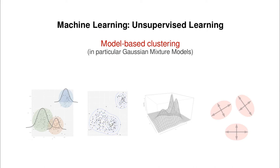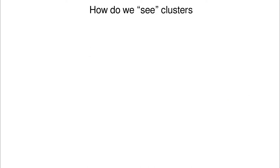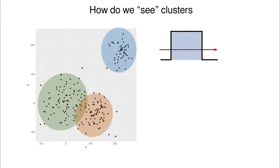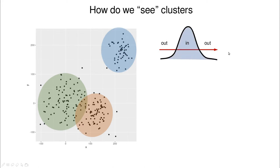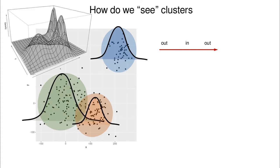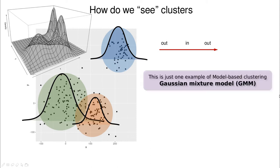Let's change gears and forget about hierarchical and partitioning clustering. Today we're going to talk about another approach called model-based clustering. The idea is that a cluster is not like a sharp in-or-out boundary — reality is more like a bell-shaped distribution where something is clearly inside and something is fuzzy at the borders. So clusters are diffuse, with probabilities of being in or out.